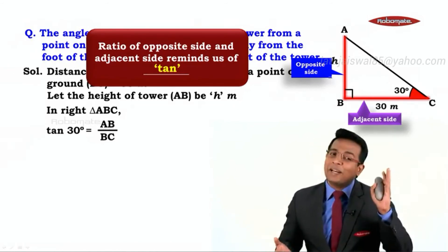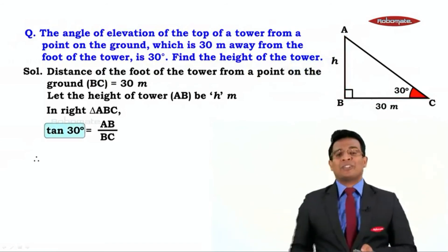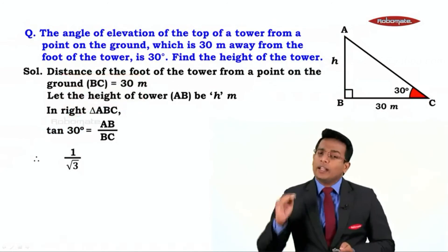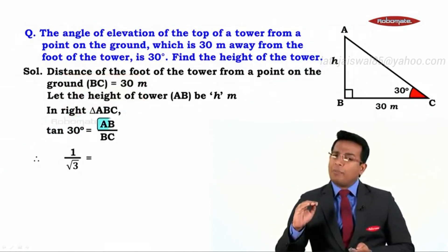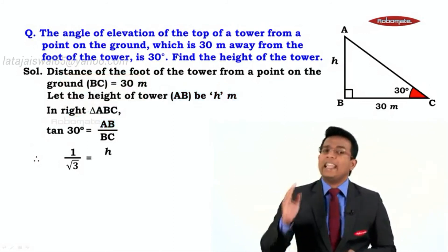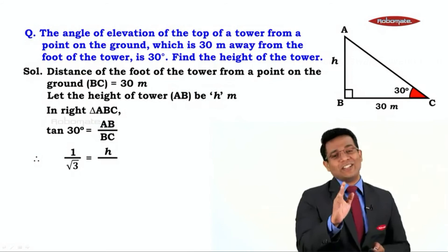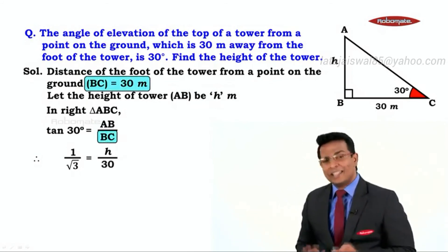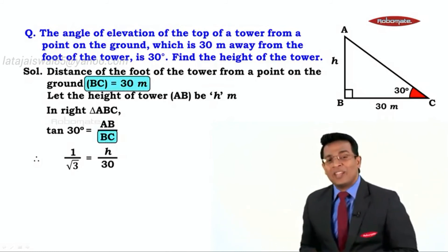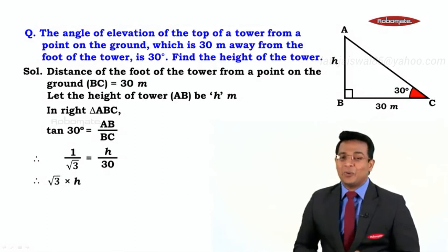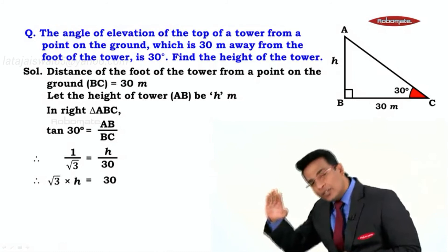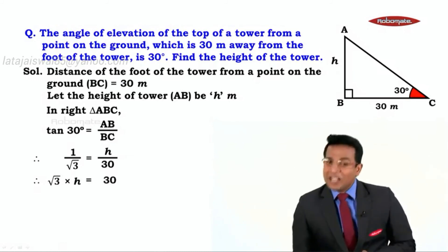Tan is opposite side upon adjacent side, which is AB upon BC. From the trigonometric table, the value of tan 30 is 1 upon √3. We substitute: 1/√3 = h/30. Cross-multiplying gives h × √3 = 30. Keeping h on one side, we shift √3 to the other side, so h = 30/√3.